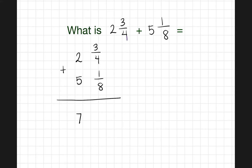We know the rule when adding fractions: the denominators — the numbers on the bottom — have to be the same in order to add the fractions. When you look at these two fractions, you'll see they have different denominators, so we have to change the problem so that both fractions will have the same denominator.